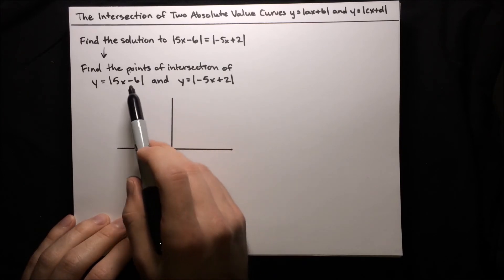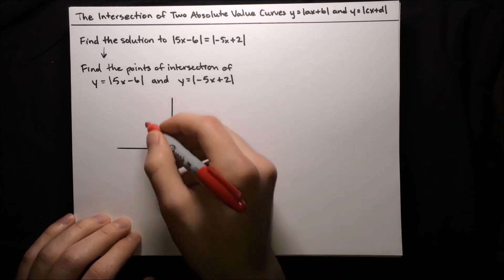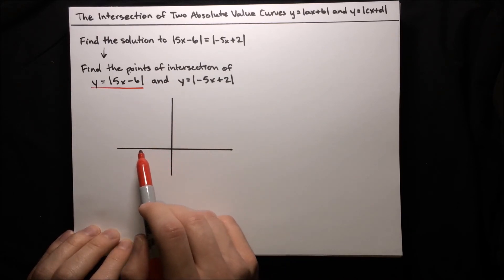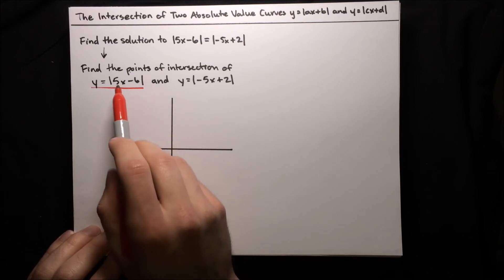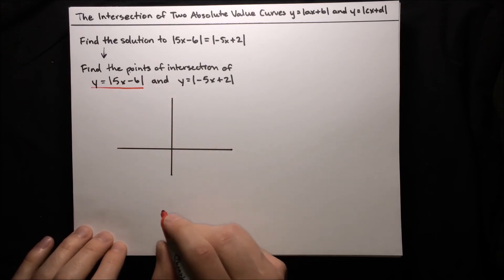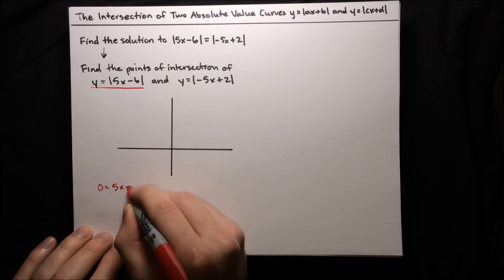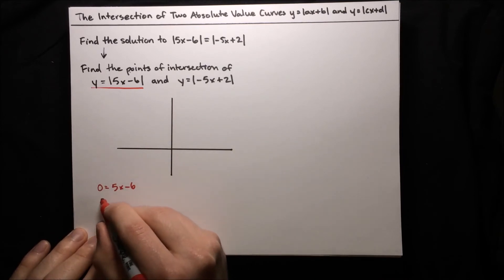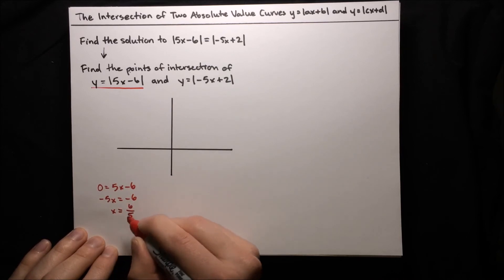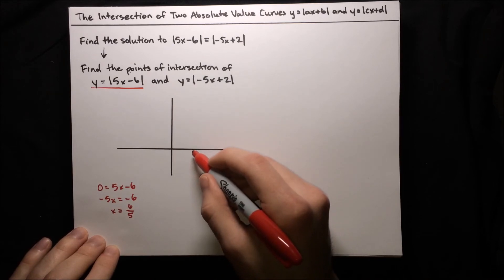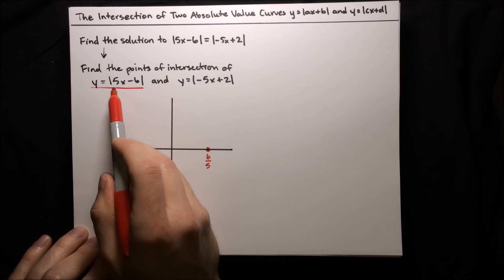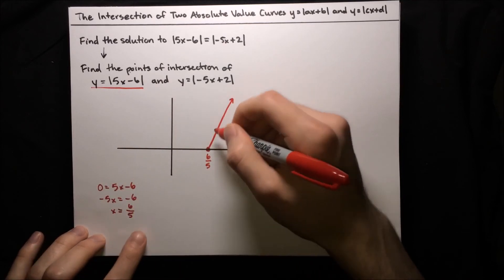We'll draw graphs of these two curves and find the points of intersection. For the first curve, y equals absolute value of 5x minus 6, there's a horizontal shift plus rescaling, so we set the inside equal to zero: 0 equals 5x minus 6, giving us x equals 6 fifths. So the graph has its x-intercept at 6 fifths on the positive side. Since the slope is 5, it goes up quite steeply, so we draw it angled steeply upward.